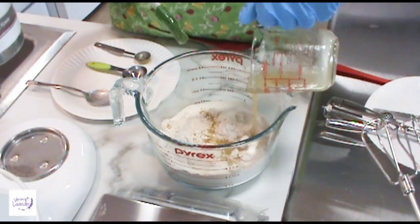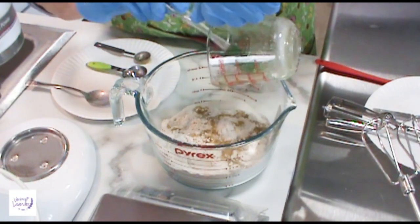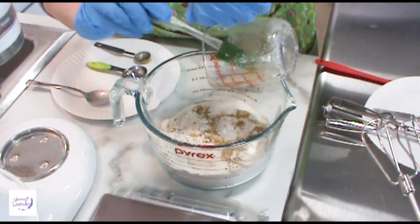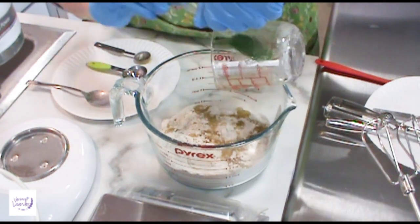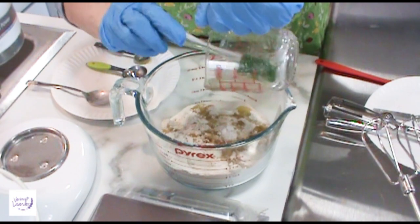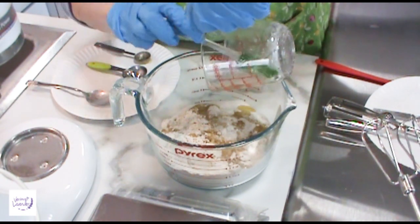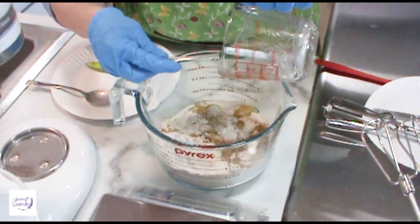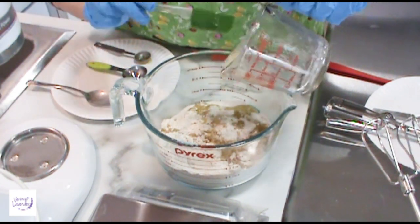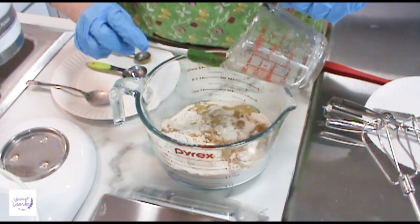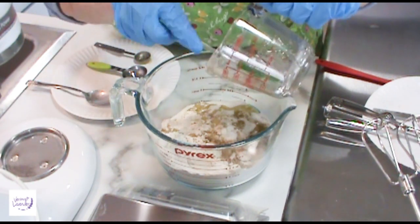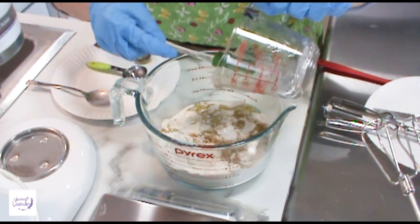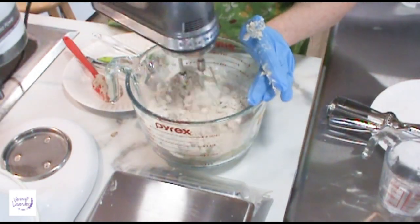Now I'm going to add my mica, which I know you're supposed to add to the liquid. So what I'll do is I'll add it to my fragrance. The reason you add the mica to the liquid is so it doesn't get airborne. Just don't want to breathe all that stuff in.